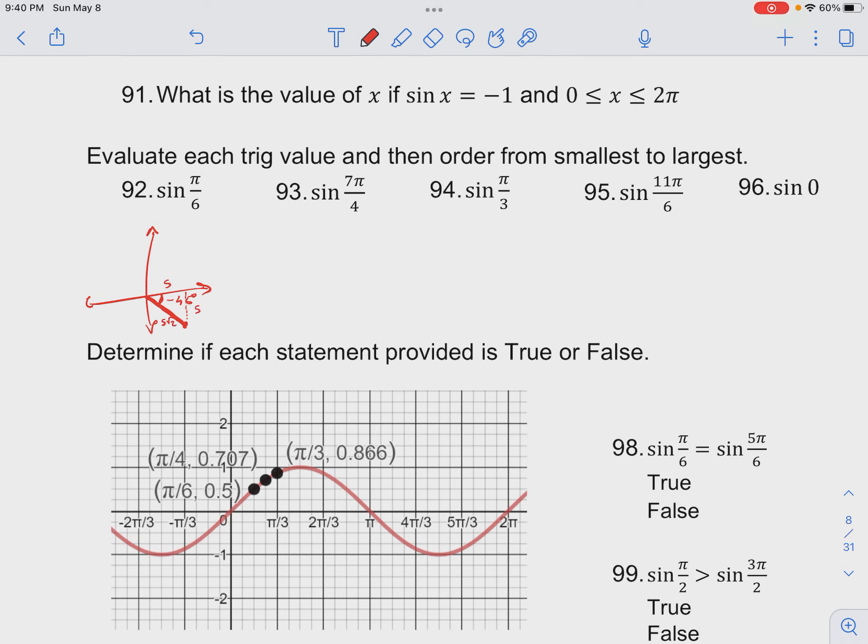If our hypotenuse, our S√2, we set as 1 because it is a unit circle, then we know that S is going to be equal to 1 over √2, which is √2 over 2.